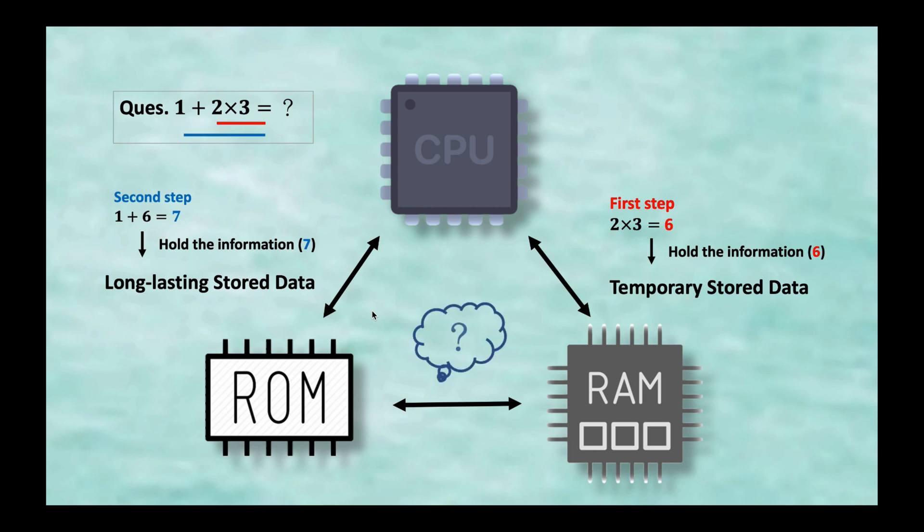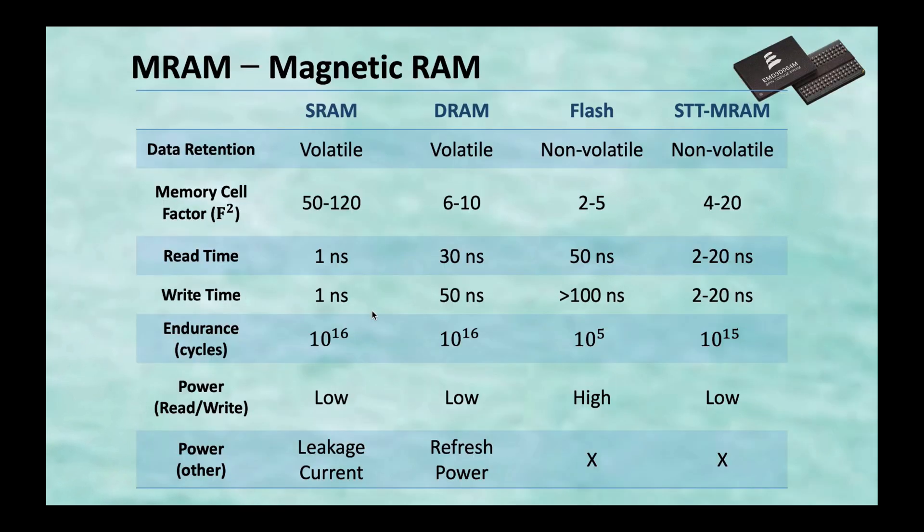The solution comes to a non-volatile device. So, we are finding a device that combines advantages of ROM and RAM, non-volatile, fast, and low power consumption. Then, we got the MRAM.